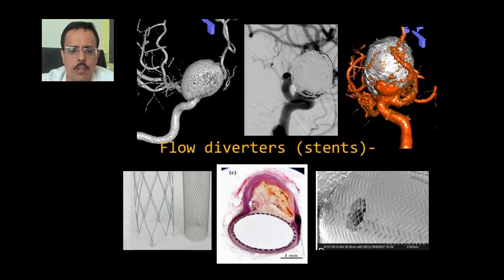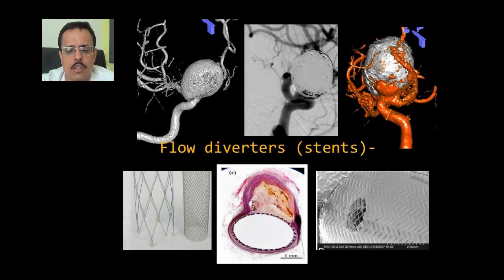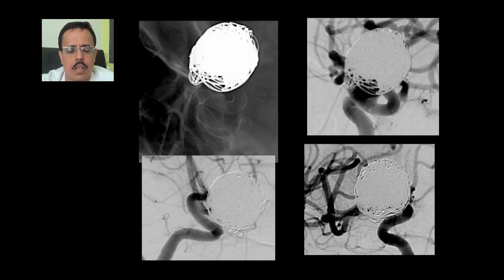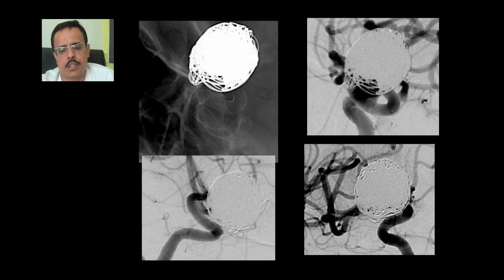We decided to treat this base with flow diverter stents. The lower image shows the regular stent side by side with the flow diverter stent, which has a much finer meshwork. When we place the stent, the intima covers it and the aneurysm thromboses, while the side branch arteries remain patent. We placed the flow diverter stent — the immediate image still shows the base filling, but on follow-up the lower image shows complete reconstruction and the aneurysm obliteration.